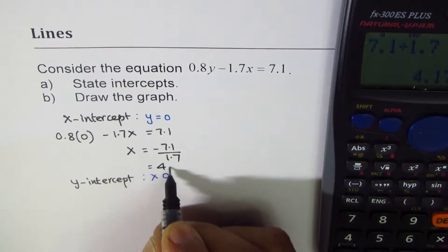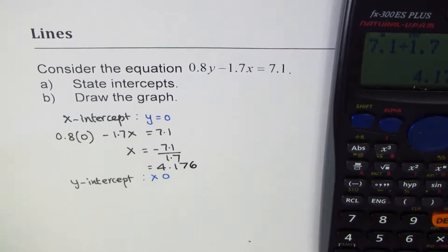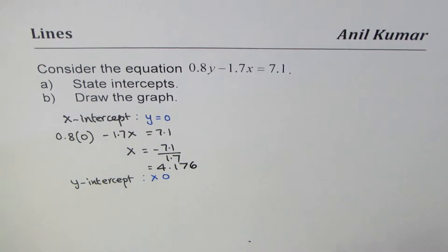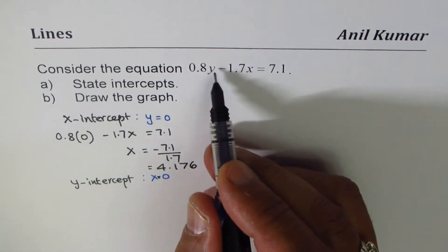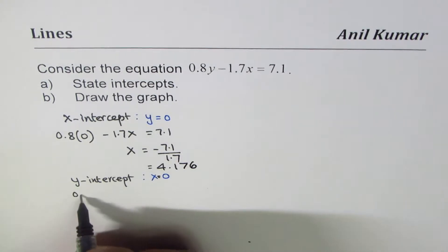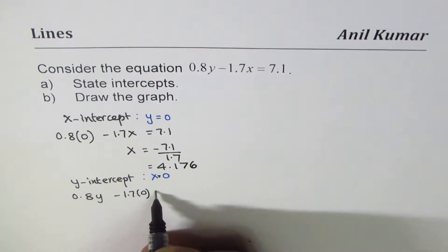Now let's also calculate the y-intercept. Y-intercept means x equals 0. So I'll substitute 0 here: 0.8y minus 1.7 times 0, which is 0, equals 7.1.